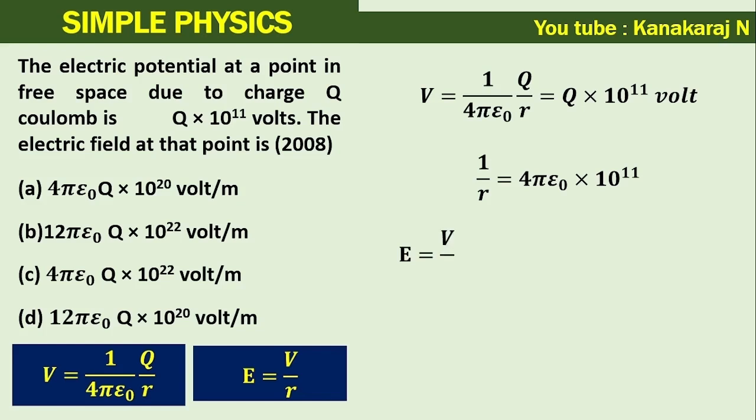So, the electric field e equals v upon r, which is equal to: in the place of v we write q times 10 power 11, and in the place 1 upon r we write 4 pi epsilon r times 10 power 11.